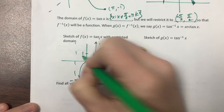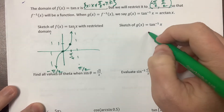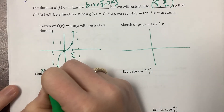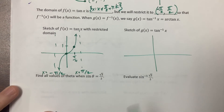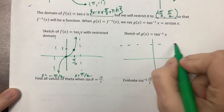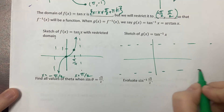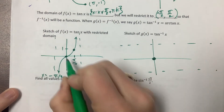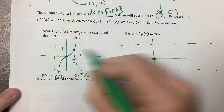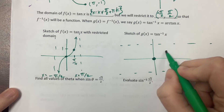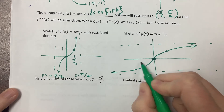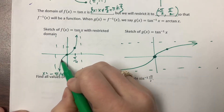A helpful point to know is pi over 4, 1. When I take the inverse, the vertical asymptotes at x equals pi over 2 and x equals negative pi over 2 become horizontal asymptotes at y equals pi over 2 and y equals negative pi over 2. Zero zero stays zero zero, and pi over 4, 1 becomes 1, pi over 4. The graph grows and then levels off, with negative 1, negative pi over 4 on the other side.